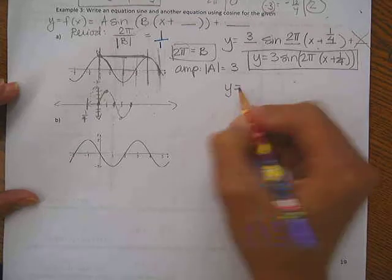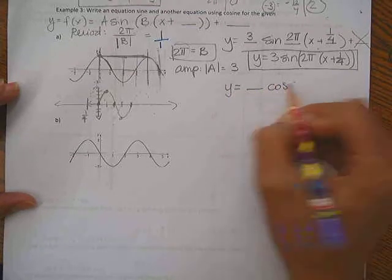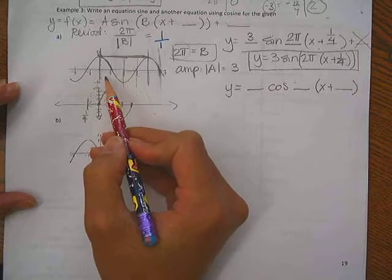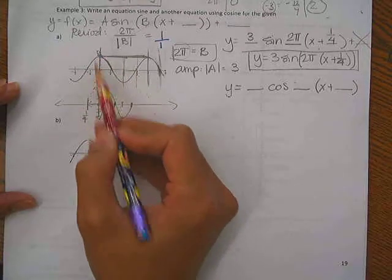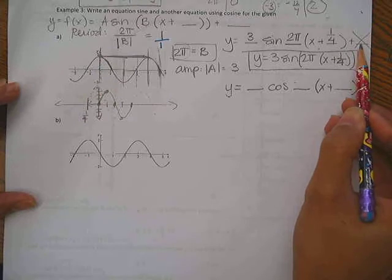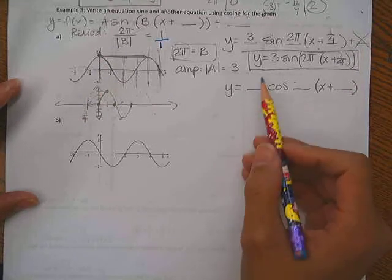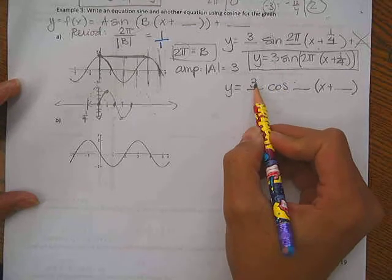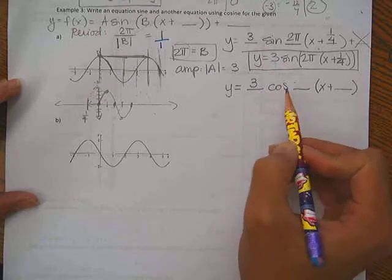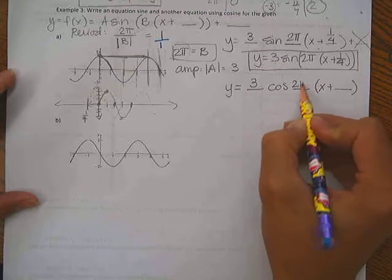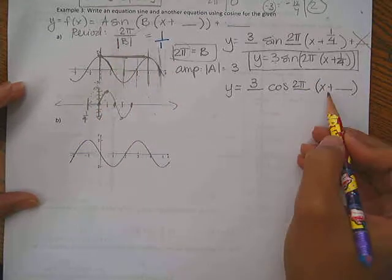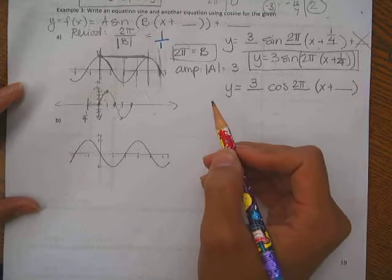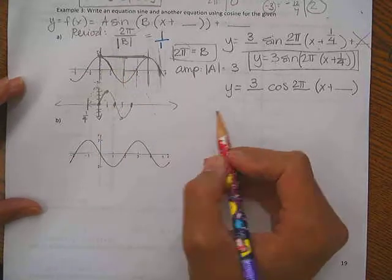Now, what would cosine look like? So y equals blank for my a, cosine blank for my b, x plus a blank for a horizontal shift. There's no vertical shift here. So I don't really need to worry about this last spot. So let's fill in my a and my b. The amplitude is going to be exactly the same as my sine. My period, cosine and sine period are two identical things. So make sure you know how to find those. Now the only thing is, is there a horizontal shift of some sort?